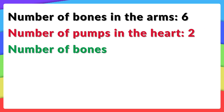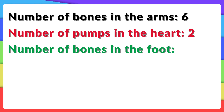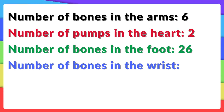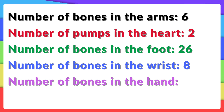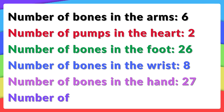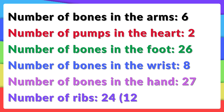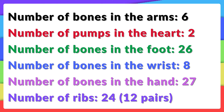Number of bones in the foot: 26. Number of bones in the wrist: 8. Number of bones in the hand: 27. Number of ribs: 24, 12 pairs.